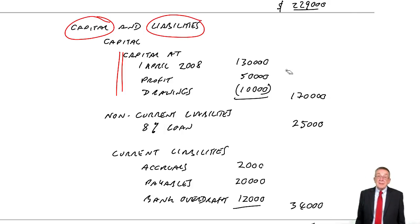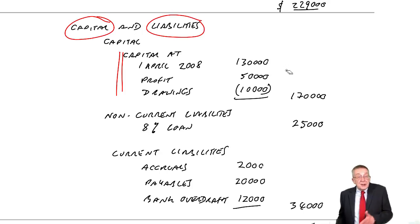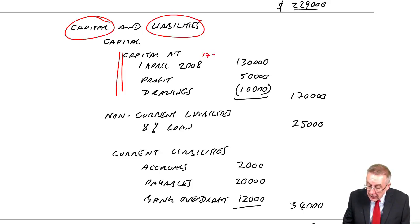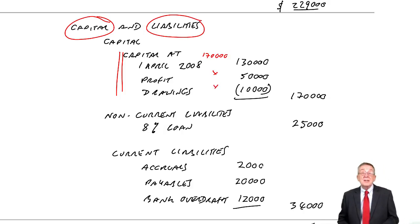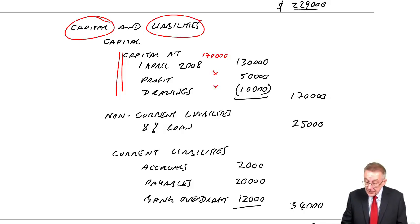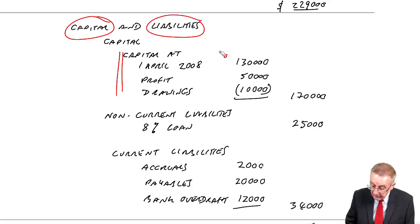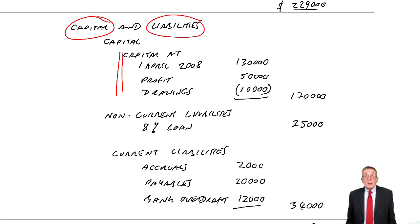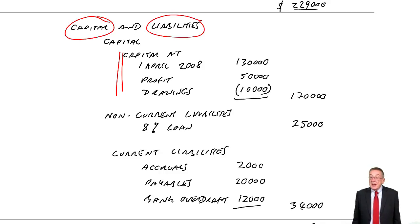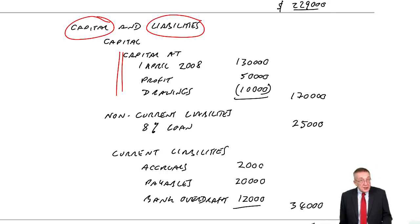At the end of the year they're owed 170, and next year we'd start saying at the beginning they were owed 170, and we'd add on next year's profit and subtract next year's drawings. So that's the amount owed to the owner. In addition, they've got liabilities — the amount owed to other people — and again, this has to be split under two headings: non-current liabilities and current liabilities.